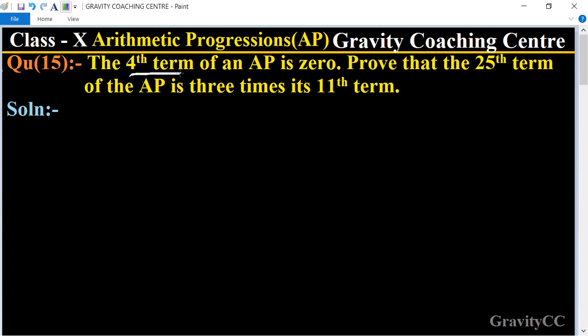In this question, given that the fourth term is equal to 0, so this implies that a plus 3d equals 0, therefore a equals minus 3d. We need to prove that the 25th term of an AP is three times its 11th term.